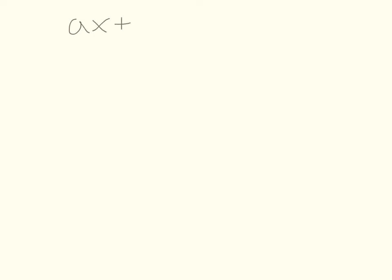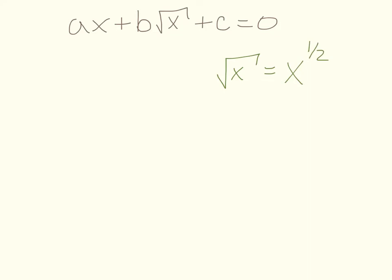Another example of quadratic form that shows up a lot and isn't as intuitive involves x and the square root of x. At first glance it may not make sense, but rational exponents include fractions — the square root of x is the same as x to the one half. So what we have is x to the first, x to the one half, and then no x at all. Yes, this is quadratic form.